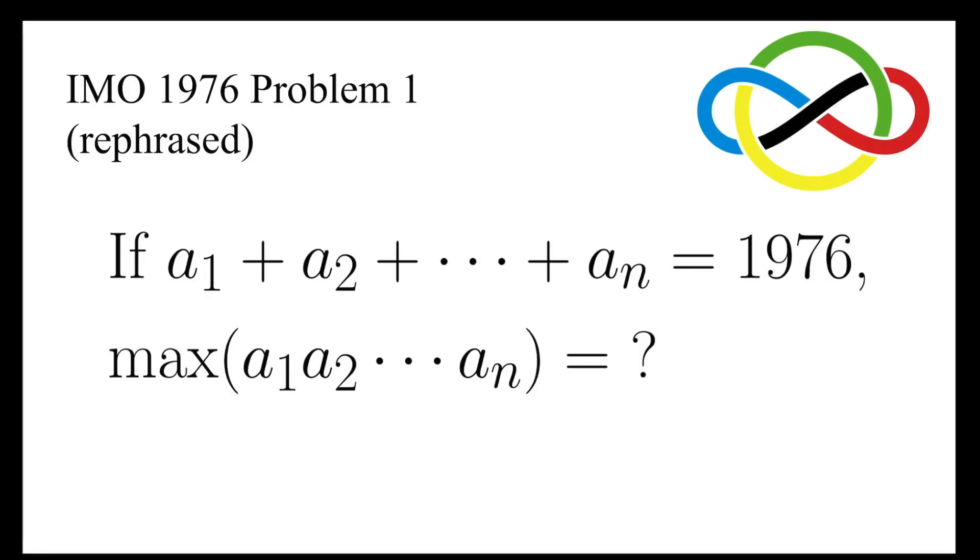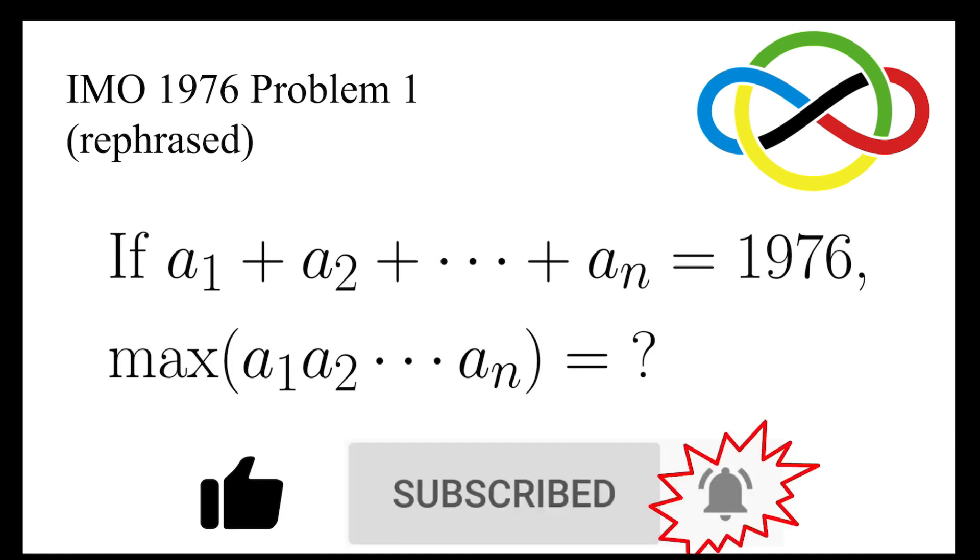In this video, we are going to find the maximum of the product of certain positive integers, given that the sum is 1976. Let us think about this problem in a more intuitive way, by trying out some smaller values.